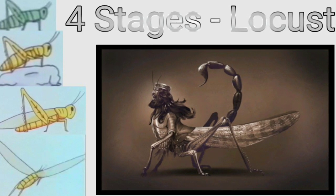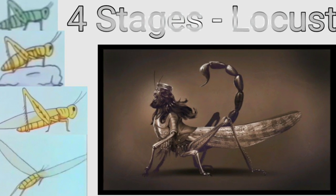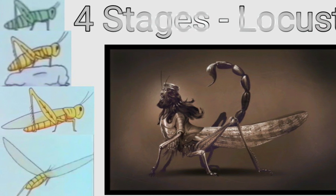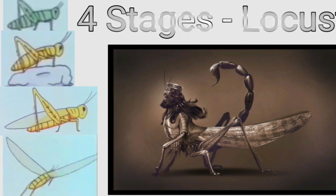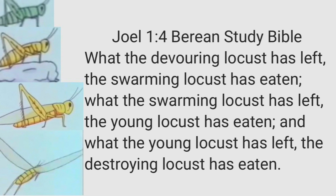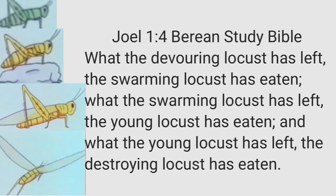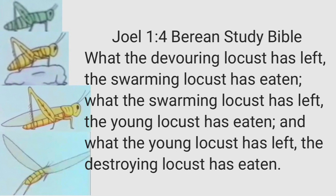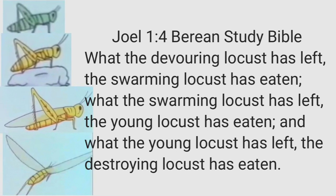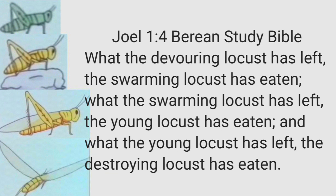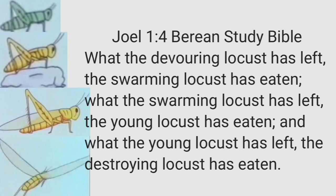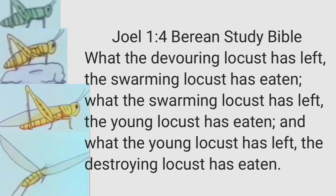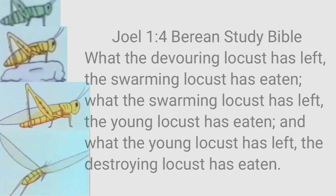The four stages or variants of the locust. This is very important for us to understand as we look at these four stages of the locust army, which is the fifth trumpet army in Revelation, seen in Joel chapter 1. What the devouring locust has left, the swarming locust has eaten. What the swarming locust has left, the young locust has eaten. And what the young locust has left, the destroying locust has eaten. Here in the Berean Study Bible translation there are four different types or stages of locusts.